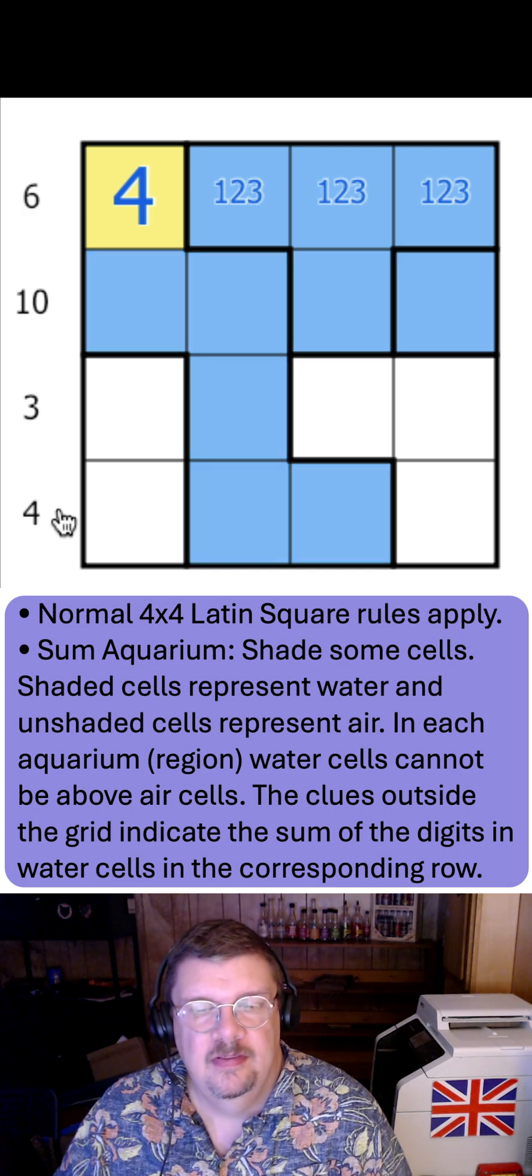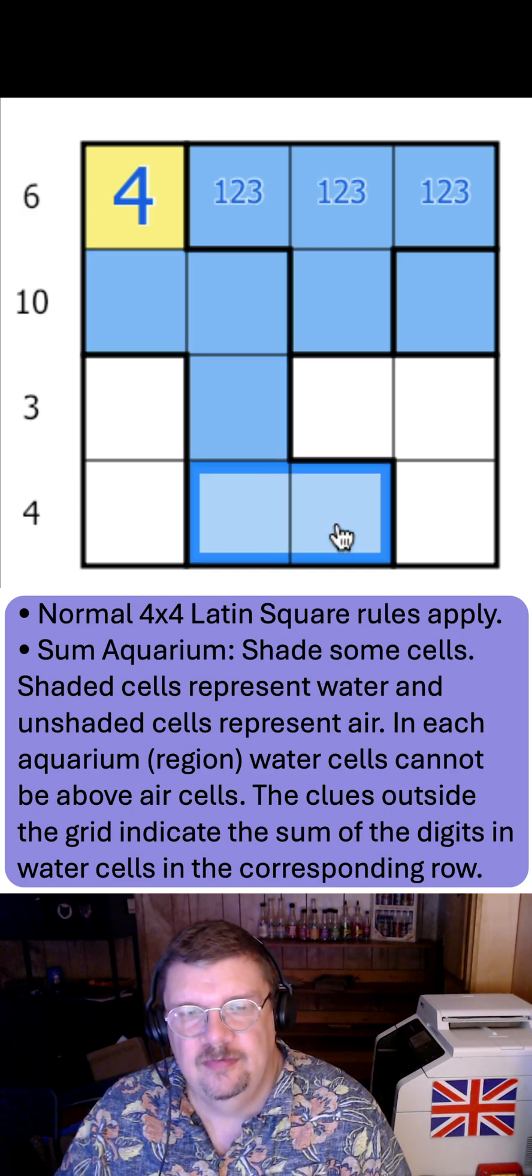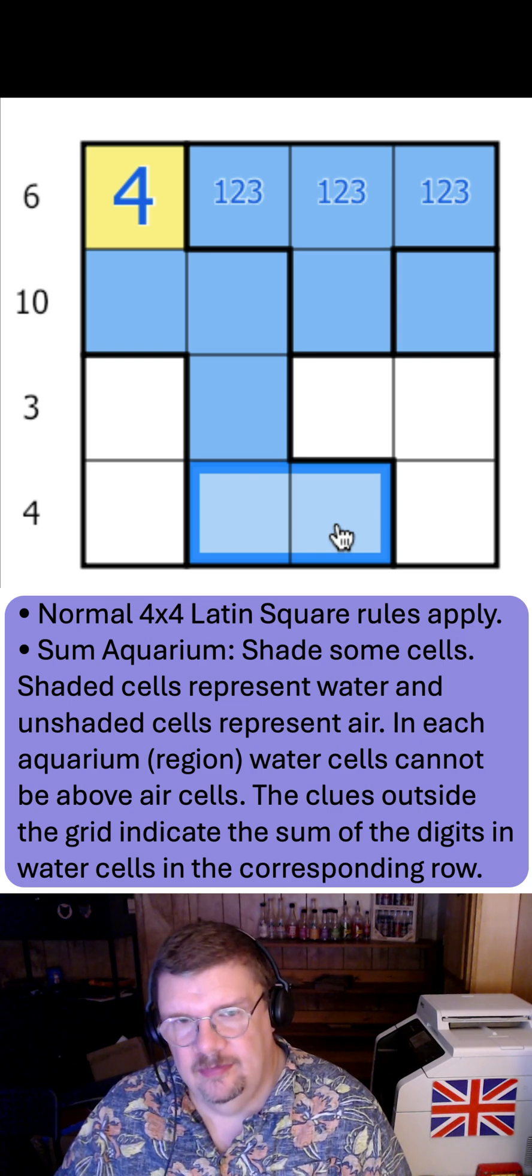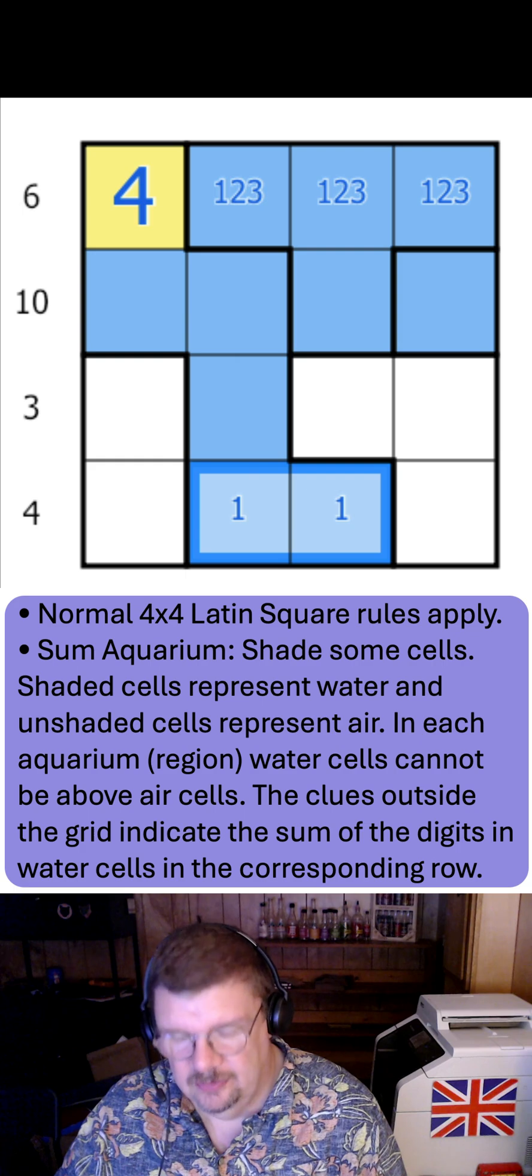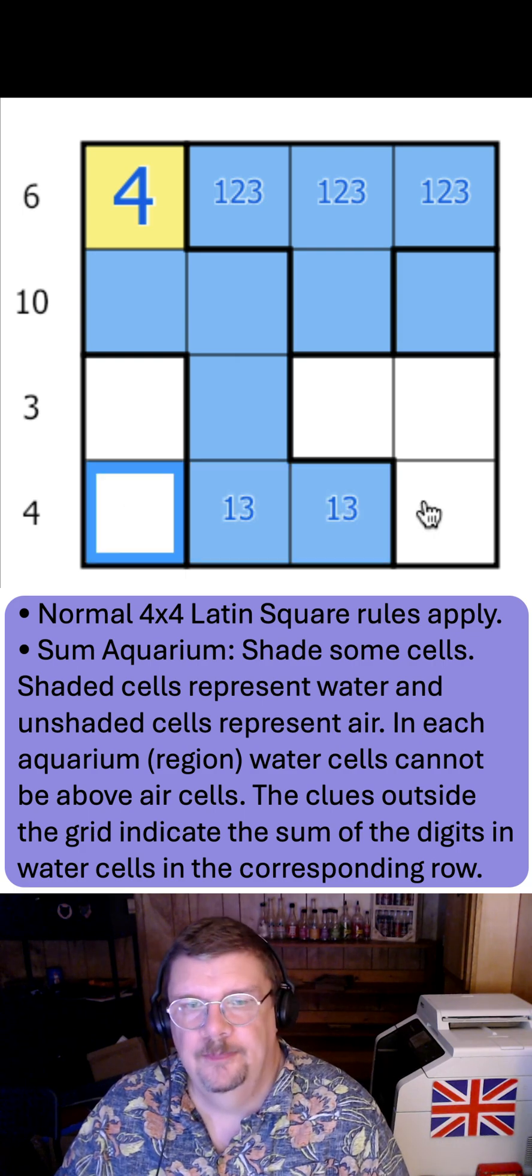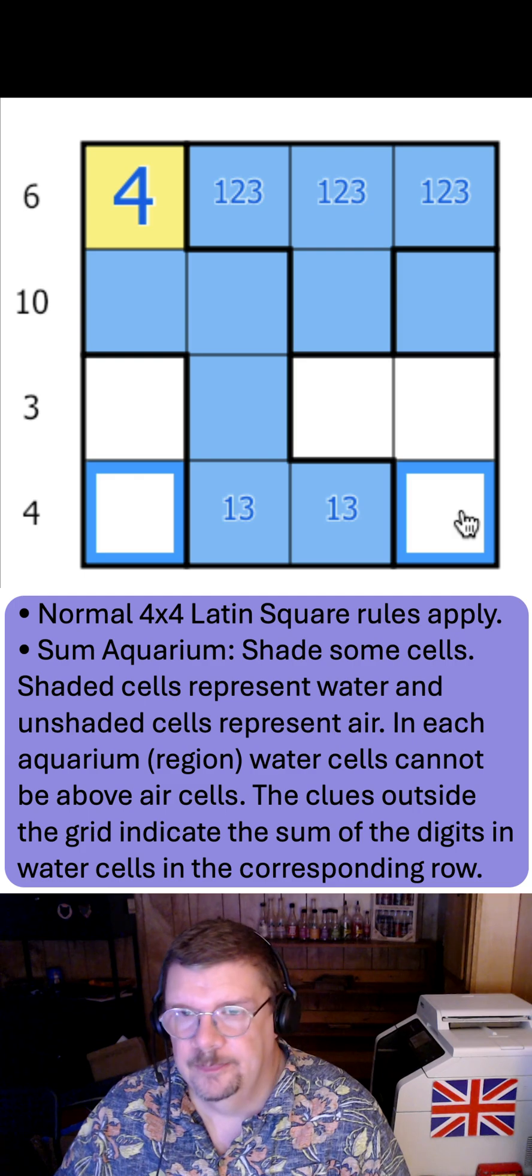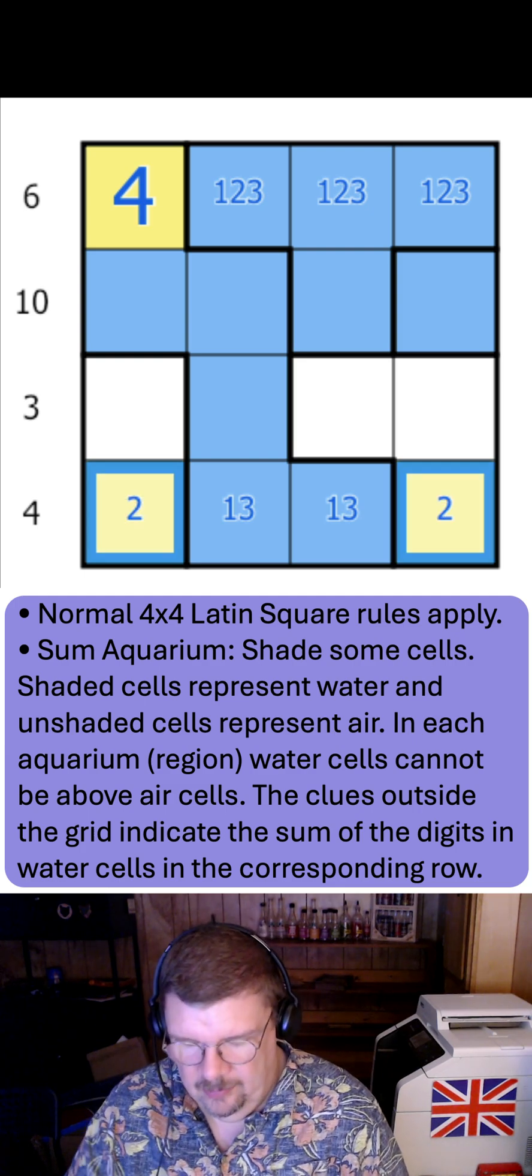This water here means that all of this must be water because water can't be above air. And now this 4 has to have at least those two digits. But if I had 3 digits, the minimum would be 6. So it is those two digits. Those are 1 and 3.